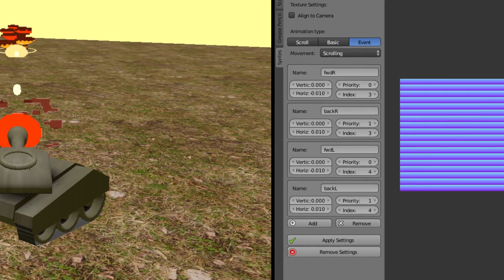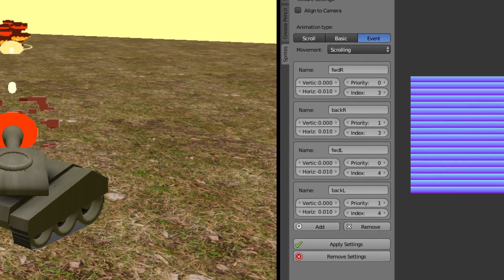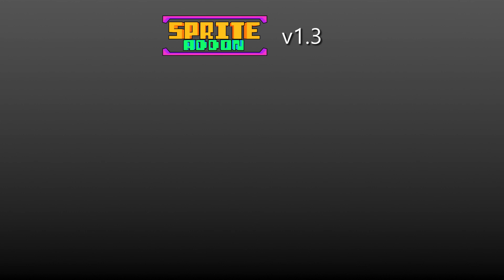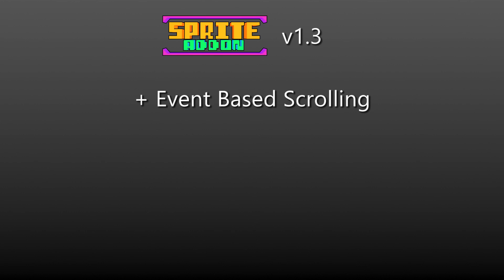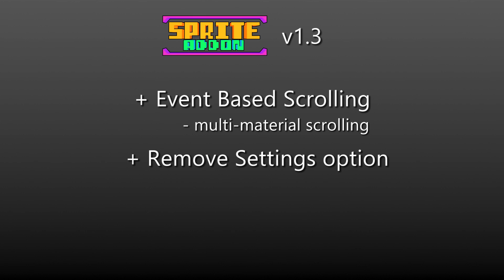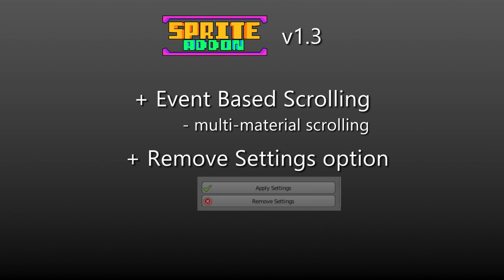The new version 1.3 includes a whole bunch of features. The main one is being able to add event-based scrolling, and as a sub-feature, being able to do this on multiple materials. On top of this, I also added a button to remove the previous settings, so if you think anything is messed up, you can just remove previous settings and start from scratch.